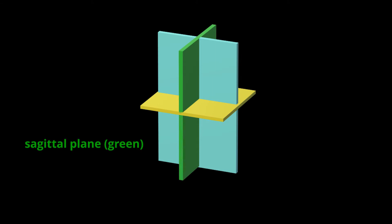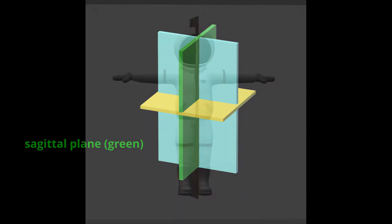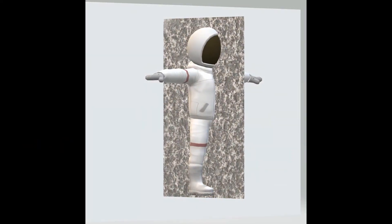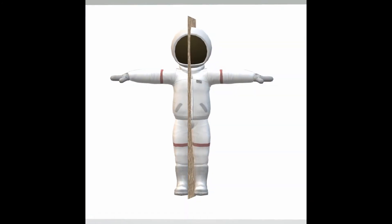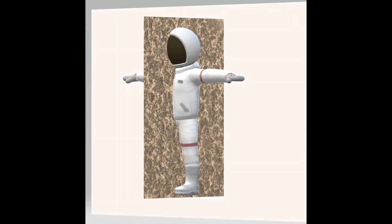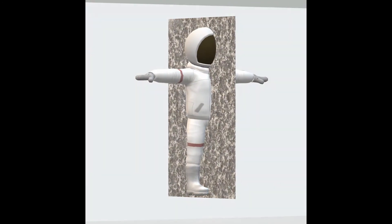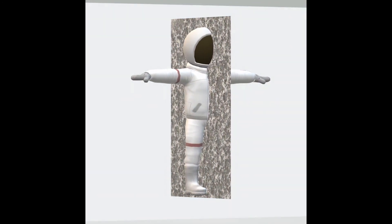The first of our cardinal planes is our sagittal plane, shown here in green. As shown here, the sagittal plane divides the body into a left and right half. Motion in this plane can be described as flexion or extension.